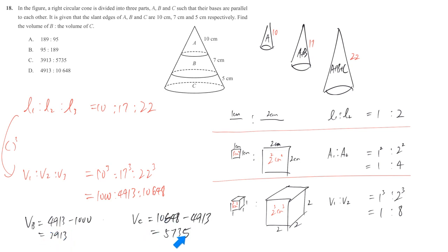This part in paper 1 is not exactly correct. It's because we just know about the ratio, but I don't know the starting point, how large A is. So, I just simply assume that A is 1000, A and B together is 4913, something like that. But anyway, it gives us the ratio, which is 3913 to 5735. The answer should be C.